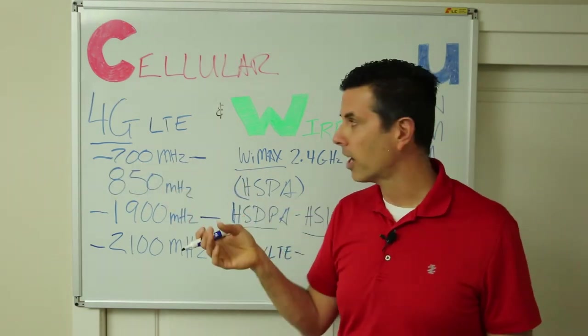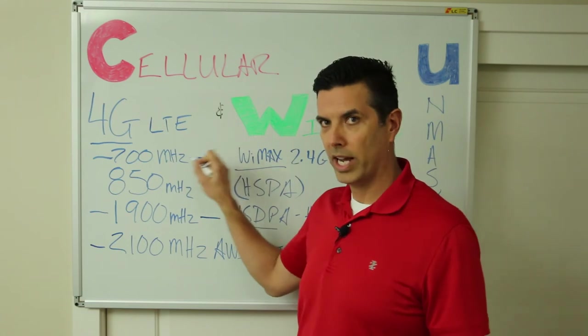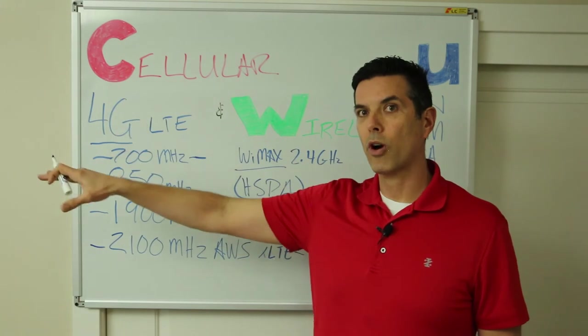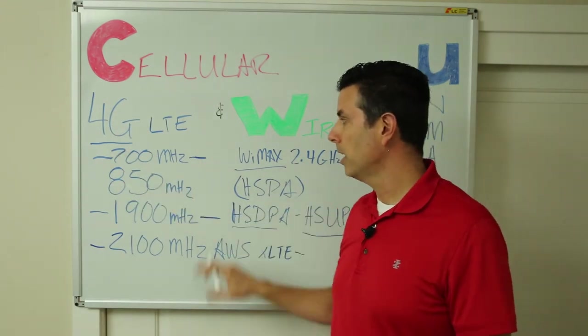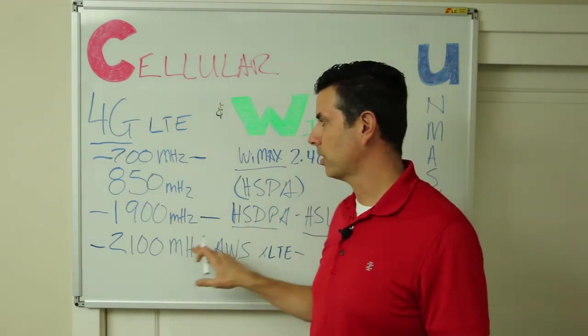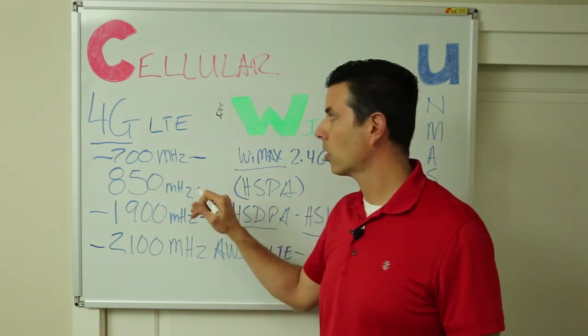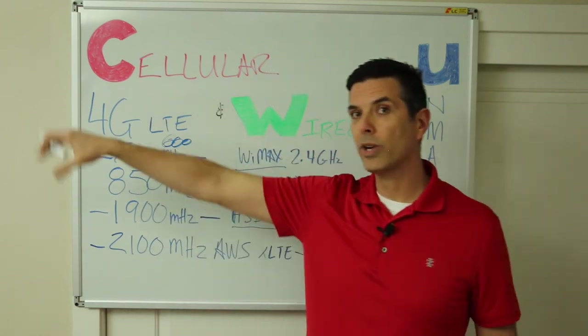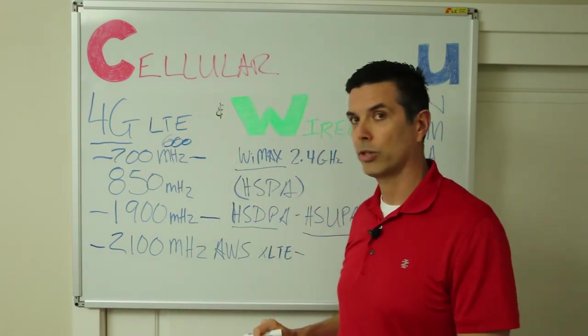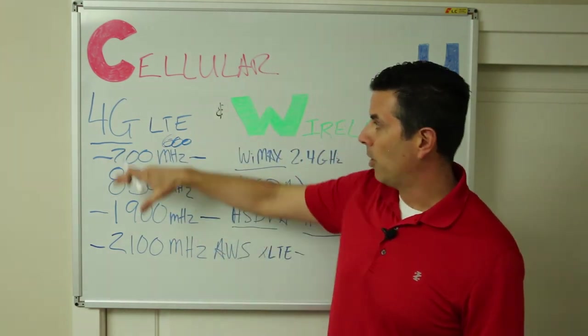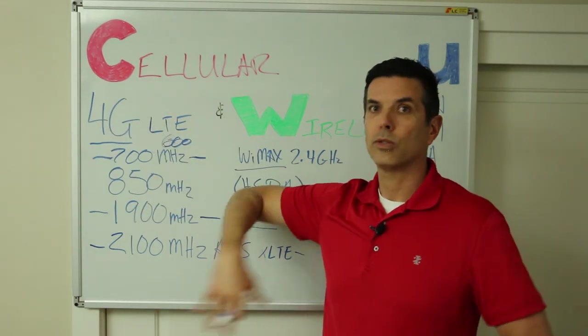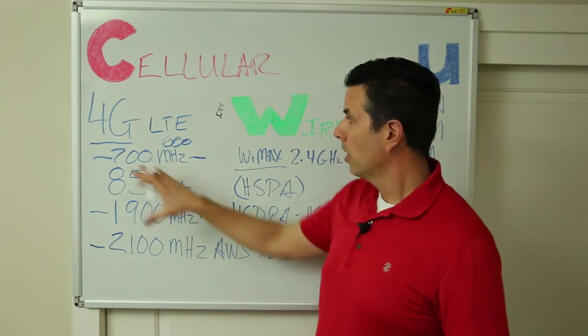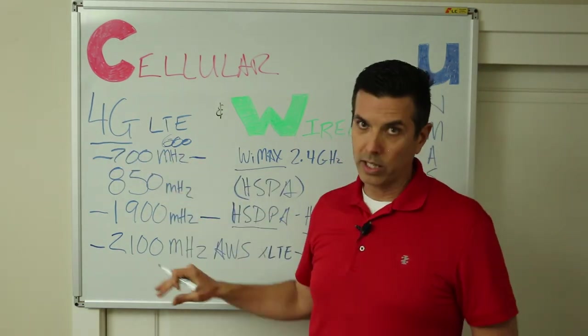T-Mobile for the longest time was just 1900 and 2100, and they got into the 700 game and got a little bit of spectrum there. They called this their long-range LTE when they launched that because the lower frequencies reach farther, go through walls better. T-Mobile was a bit limited when they had just these two bands. Now they've got more. They even have some 600 megahertz, so they can really reach deep into those rural communities with their services.